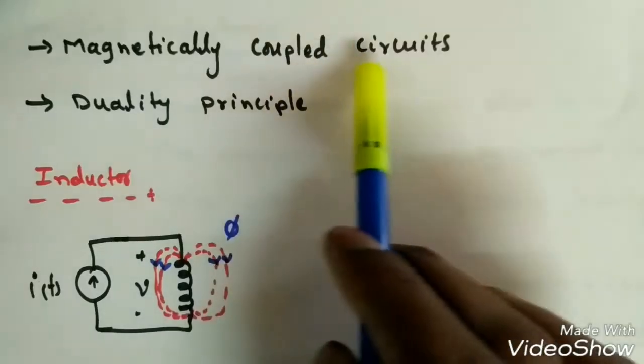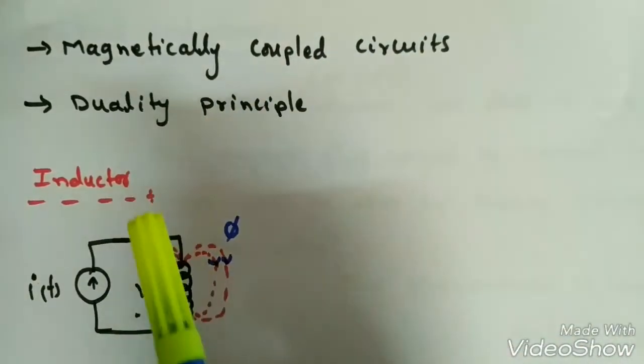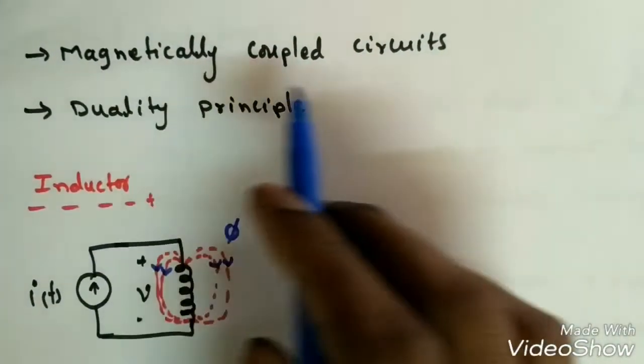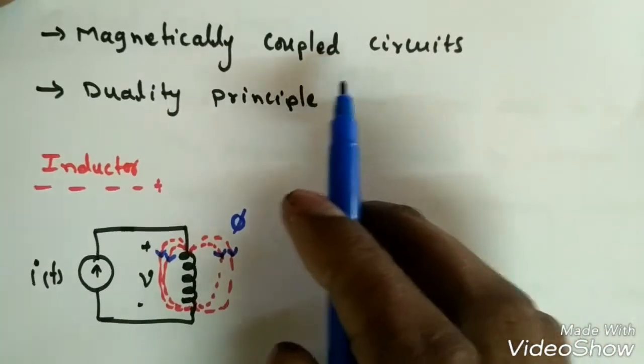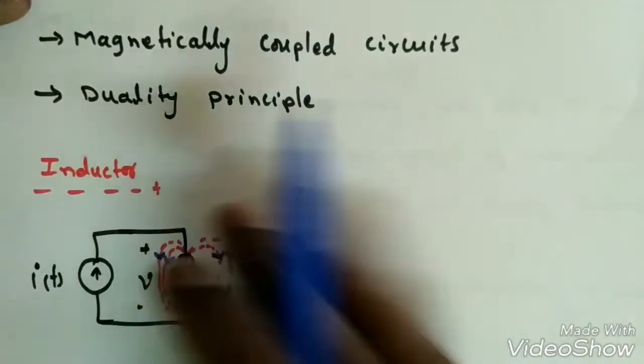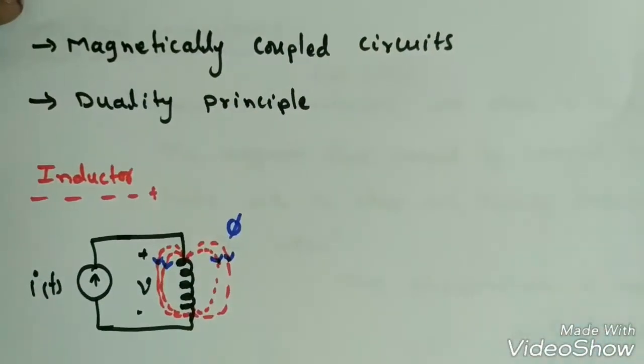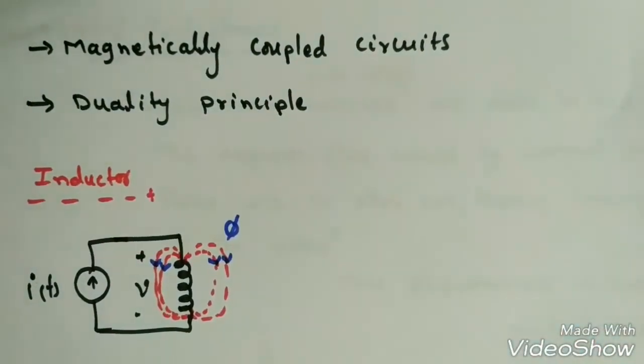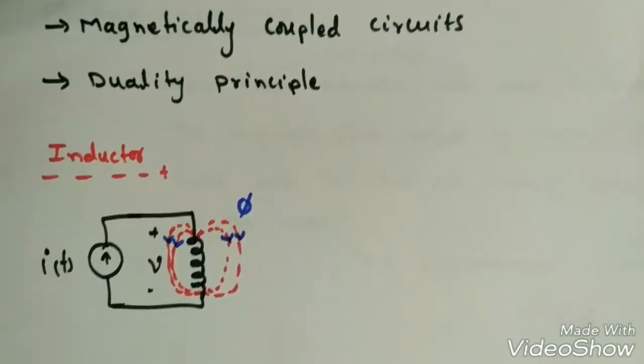These are the last two concepts in this network theory subject: magnetically coupled circuits and the duality principle. First we will discuss the magnetically coupled circuits.